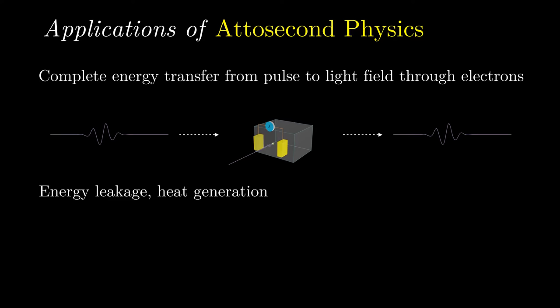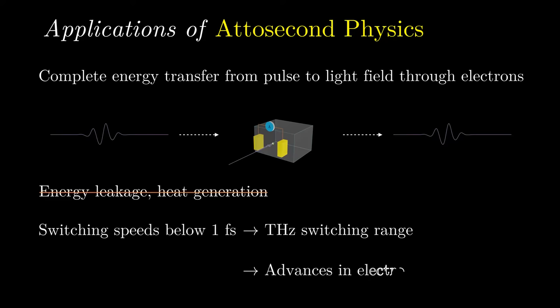This ability to switch the conductivity, and consequently the current, on and off at timescales shorter than one femtosecond, could lead to huge advances in ultrafast electronics, where processing speeds are pushed into the terahertz range. Unfortunately, this technology is still in its infancy, as large experimental setups are needed to produce and modify the pulses, so it may be many years until this technology finds its way into your desktop computer.